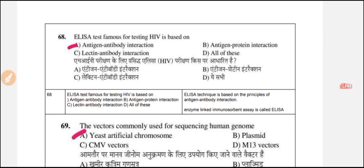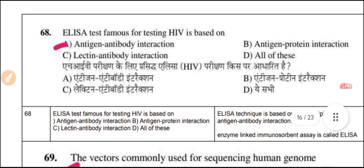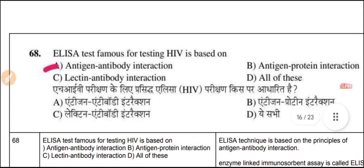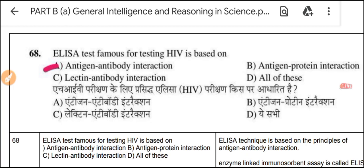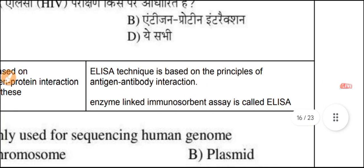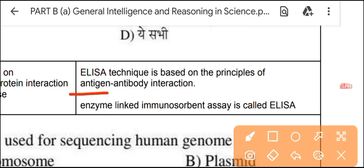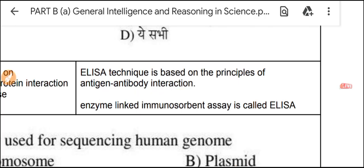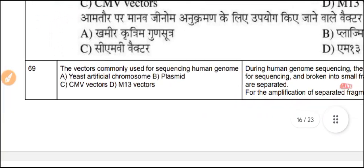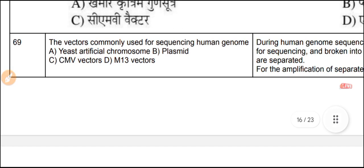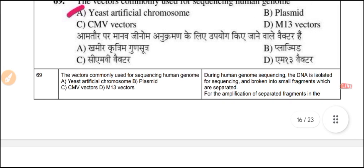We have completed 68 questions; 12 remain — take a short break then continue. Question 68: The ELISA test, famous for testing HIV, is based on antigen-antibody interactions. ELISA stands for Enzyme-Linked Immunosorbent Assay. Question 69: The vector commonly used for sequencing the human genome is the YAC — Yeast Artificial Chromosome.